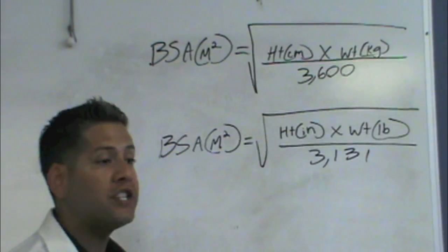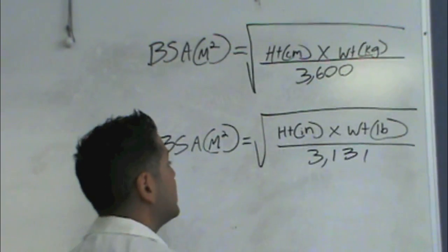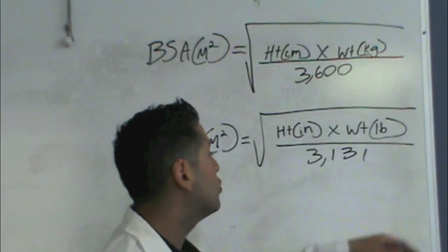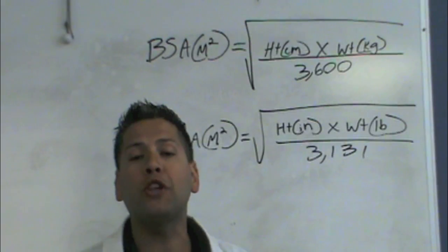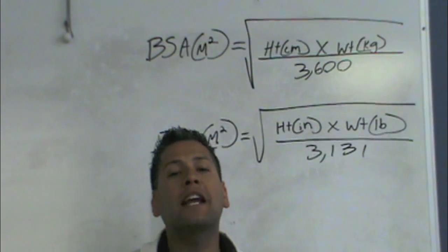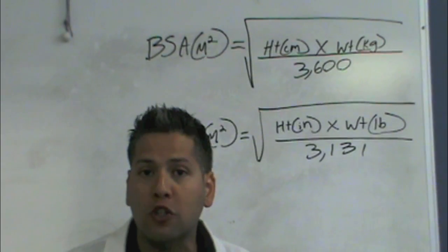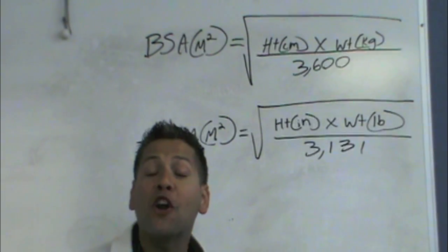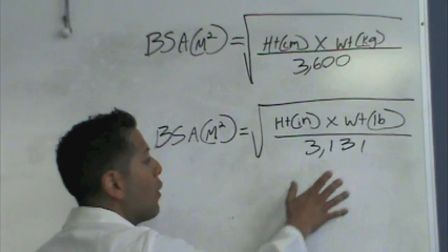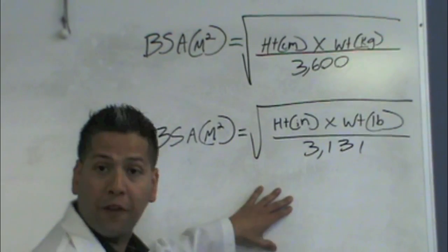Now, for the next equation, you're going to see that the height is in inches times the weight that's in pounds divided by 3,131. Now, this is what we use here in the States. And I always think about December 31st, which is New Year's. I'm sure we all like New Year's, right? So, 3,131. That's how we won't get them confused.